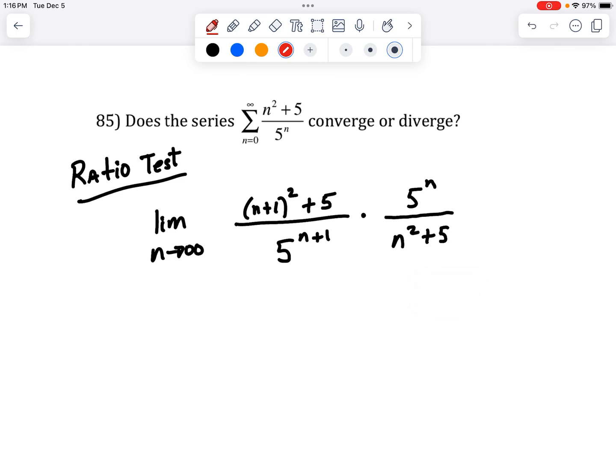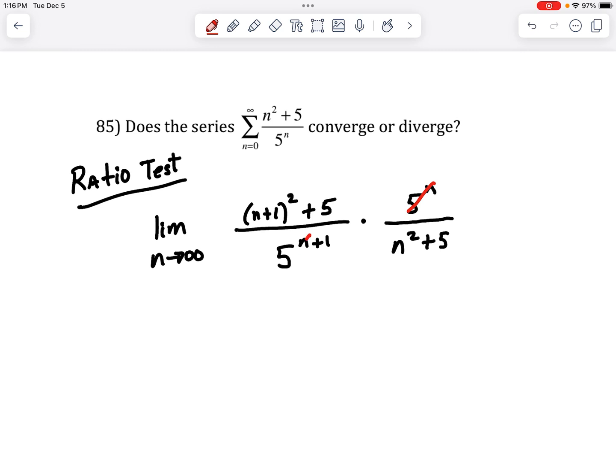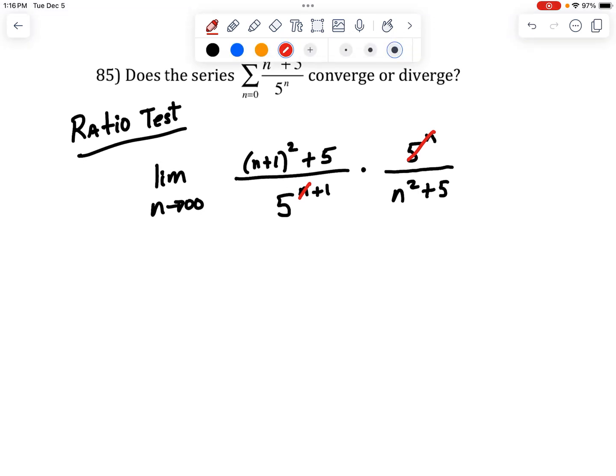So the 5 to the n can cancel the 5 to the n, but that's still going to leave 5 to the 1 or 5 on the bottom. And that's about the extent of the algebra. So put away the red pen.